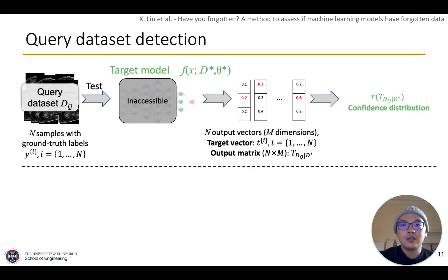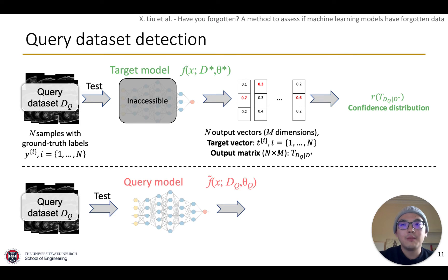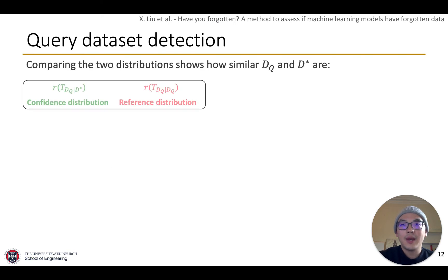To detect if DQ is in D star, we then propose to train a new model with DQ that has the same model design as the target model. Then, we test the query model with DQ. Similarly, the reference distribution could be obtained. By comparing the two distributions, we can detect if DQ is in D star. We calculate the KS distance between the two distributions. That is termed as detection KS.